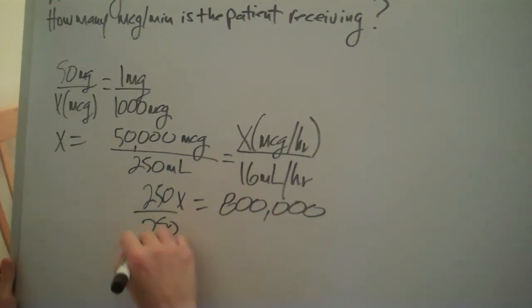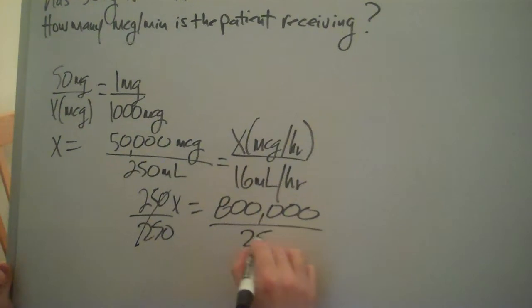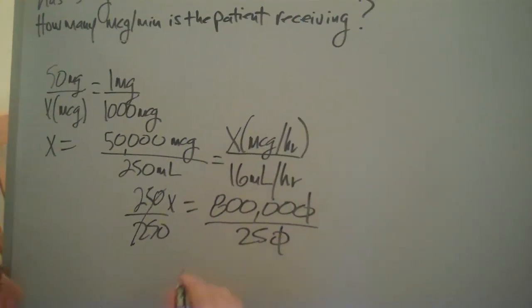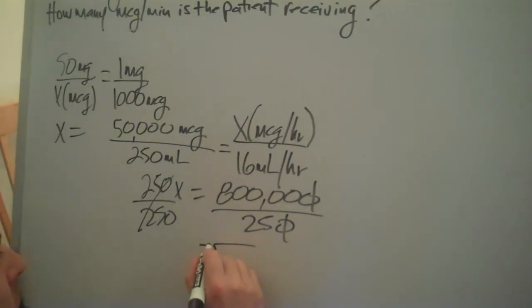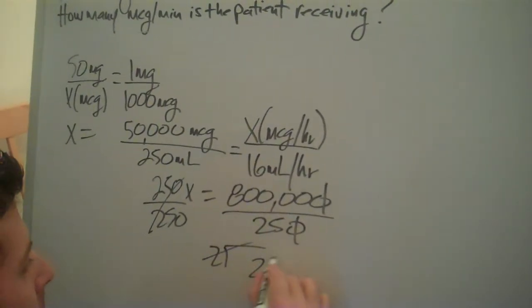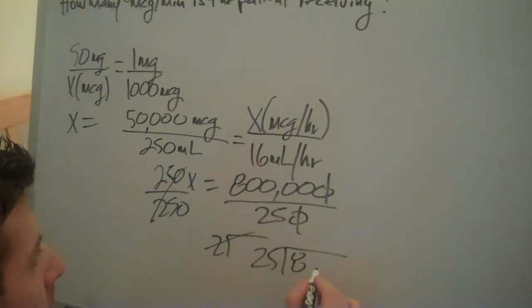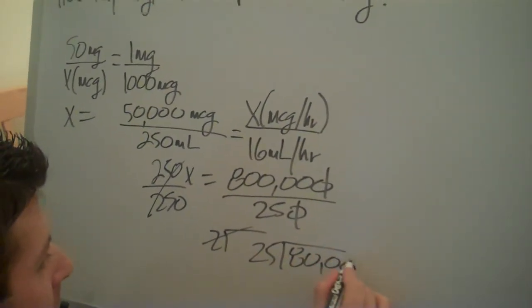And divide. That crosses out. 250, make life a little bit easier. Lose a zero. And we have 25 to 80,000.